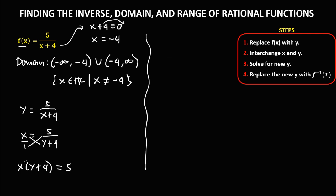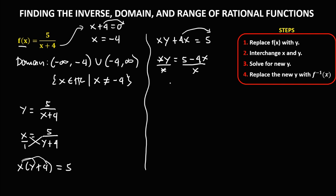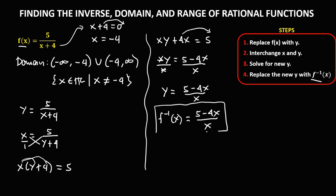Simplify by distributing x: xy plus 4x equals 5. To solve for y, transpose positive 4x to the right: xy equals 5 minus 4x. Then divide by x to solve for y, so y equals 5 minus 4x over x. Replace y with the inverse: f⁻¹(x) equals 5 minus 4x over x. This is the inverse of the given rational function.